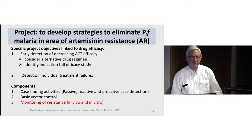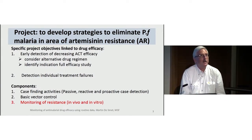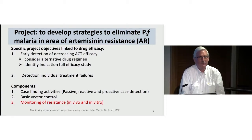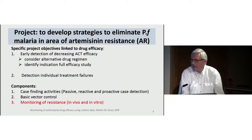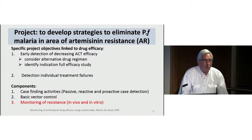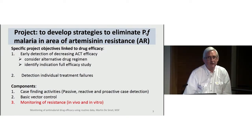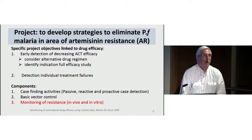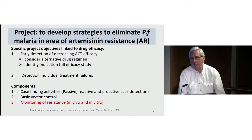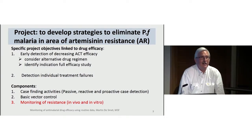Within the broad objective of the project, we have specific questions linked to efficacy and resistance. The first is on the public health level: we want to detect any decrease in the efficacy of ACTs — artemisinin-based combination therapies — at an early stage, so we can change the drugs or regimen, or trigger a full-scale efficacy study. Such a study is very resource-intensive, requiring PCR, microscopy, and at least 10 samples per patient from day 1 through day 42.